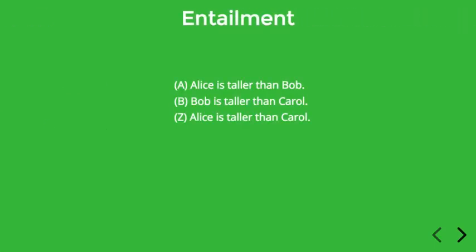Let's look at another example. Suppose you met someone who believes A and B — they believe that Alice is taller than Bob, and they believe that Bob is taller than Carol — but they don't accept Z, that Alice is taller than Carol. Clearly this person is confused. If person X is taller than person Y, and person Y is taller than person Z, then necessarily person X is taller than person Z. In mathematical terms, we might say that being taller than is a transitive property. But in any case, it would simply be crazy to accept A and B and deny Z.